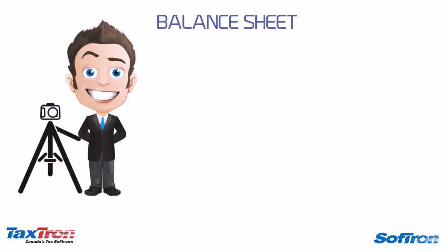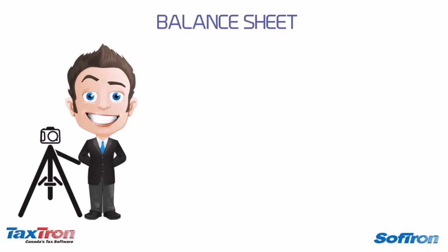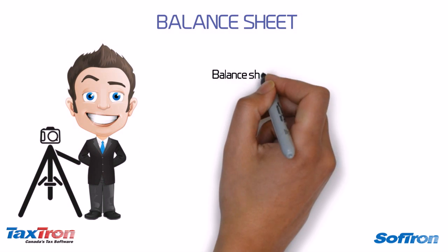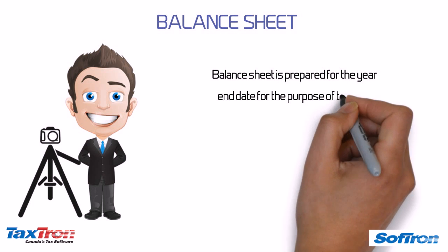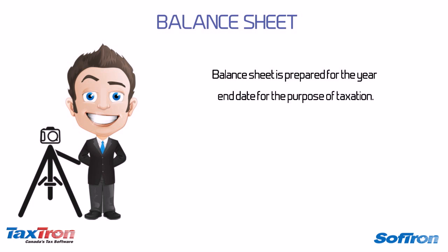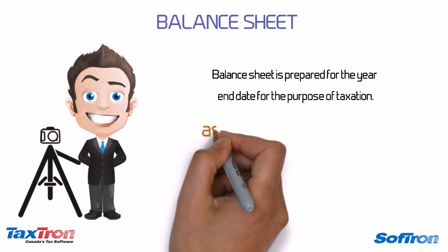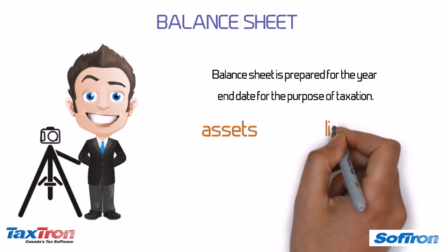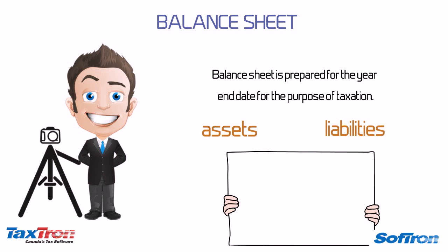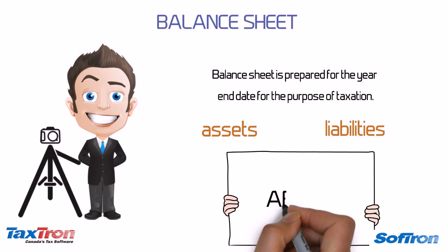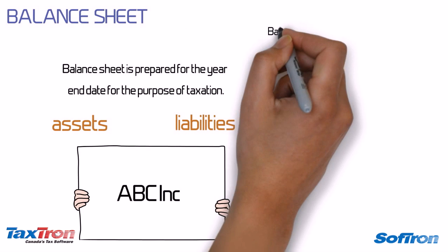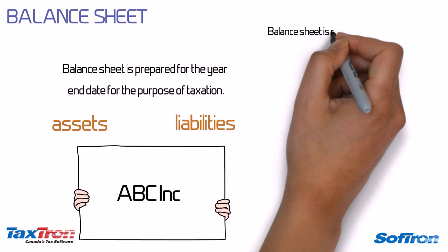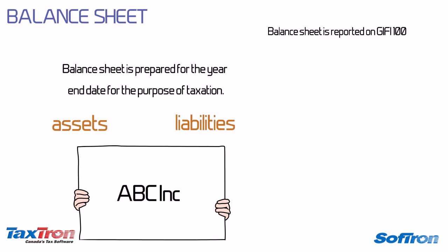The balance sheet is typically a snapshot of a corporation's financial health at a point in time. It is prepared for the year-end date for the purpose of taxation. In this case, the balance sheet will record the assets, liabilities, and Charles' equity in ABC Incorporated, as Charles is the only shareholder of the corporation. The balance sheet is reported on GIFI 100.